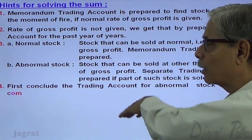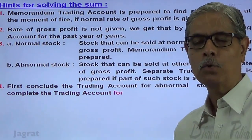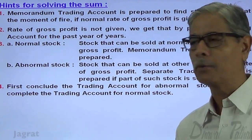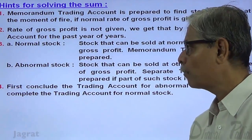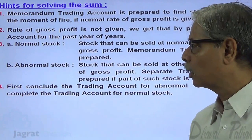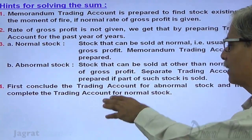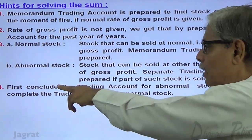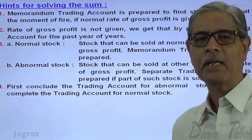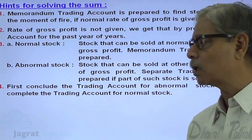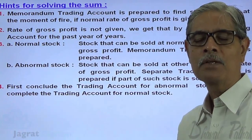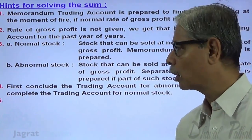After preparing these two types of trading accounts — one for normal stock and one for abnormal stock — first conclude the trading account for abnormal stock, and then complete the trading account for normal stock.